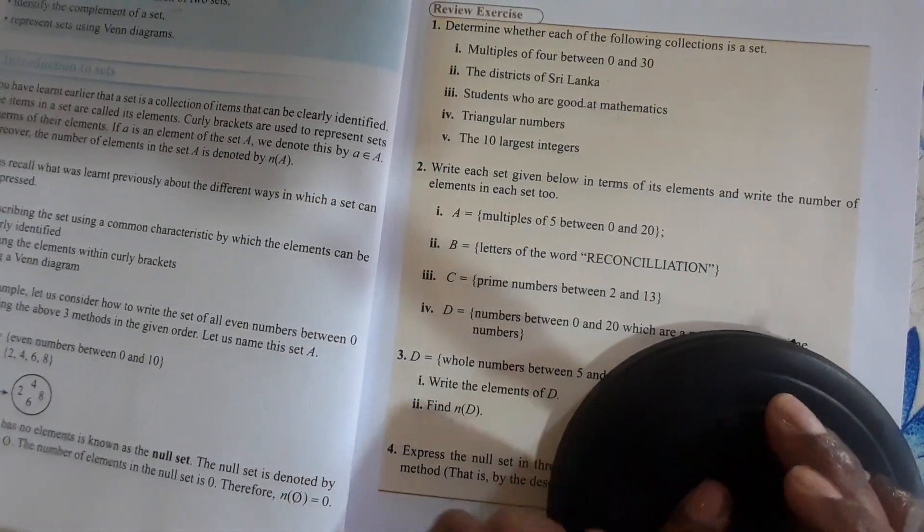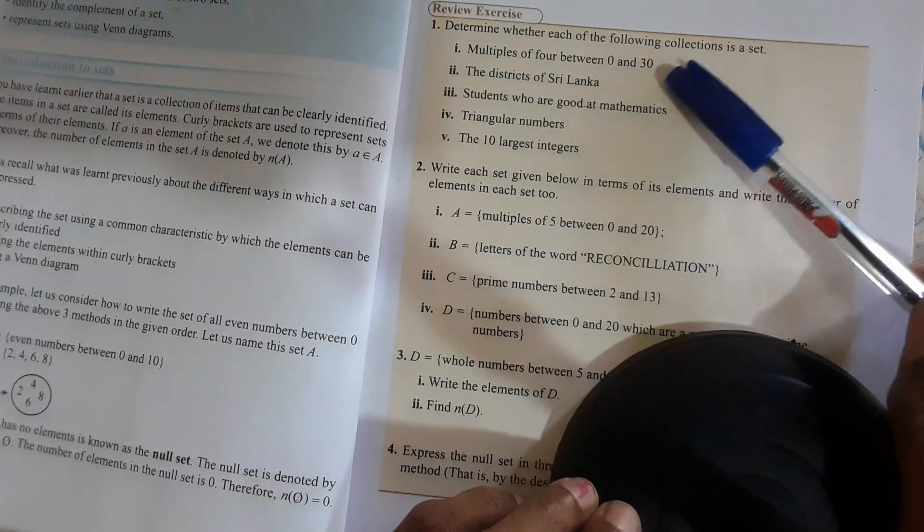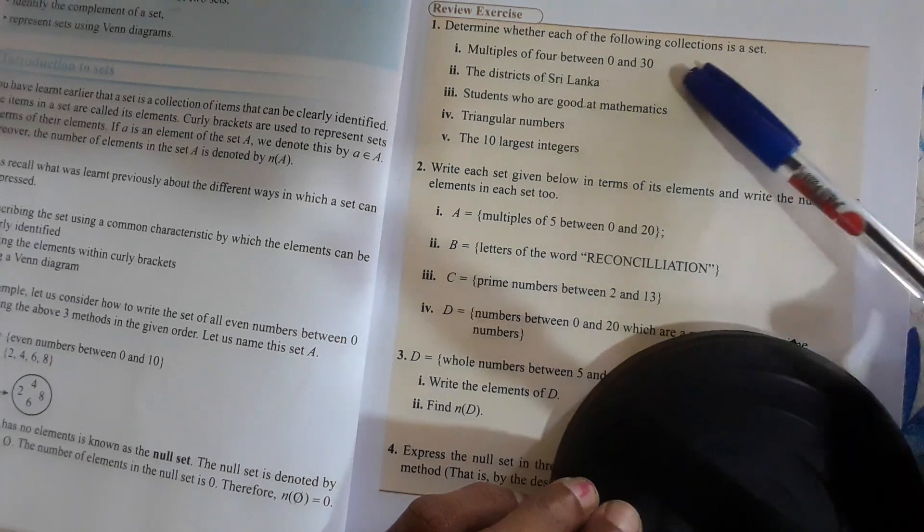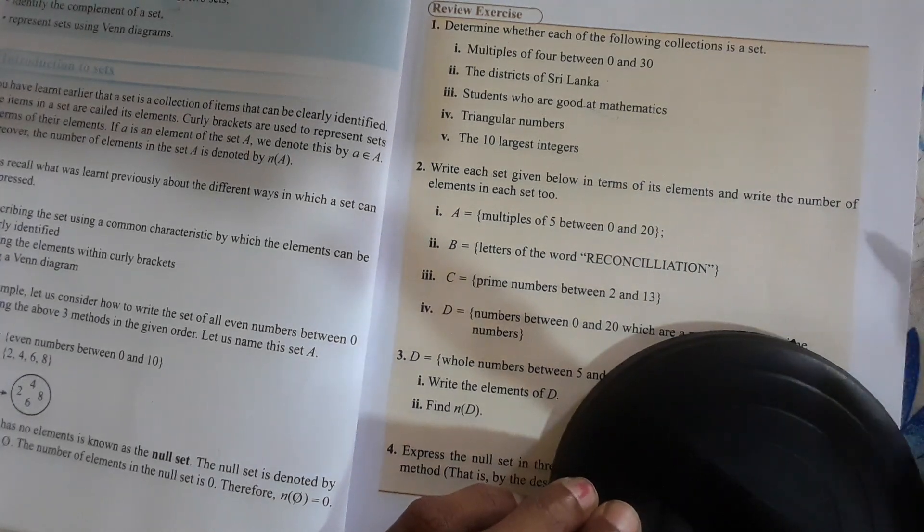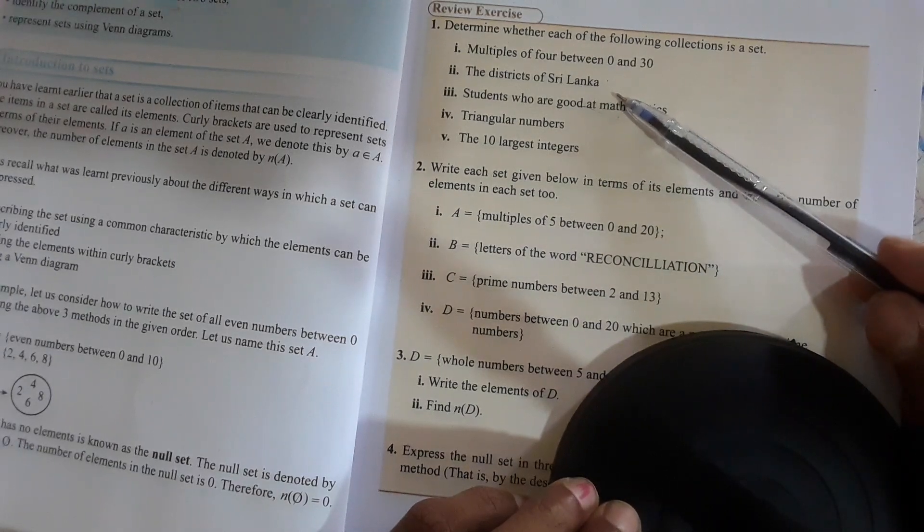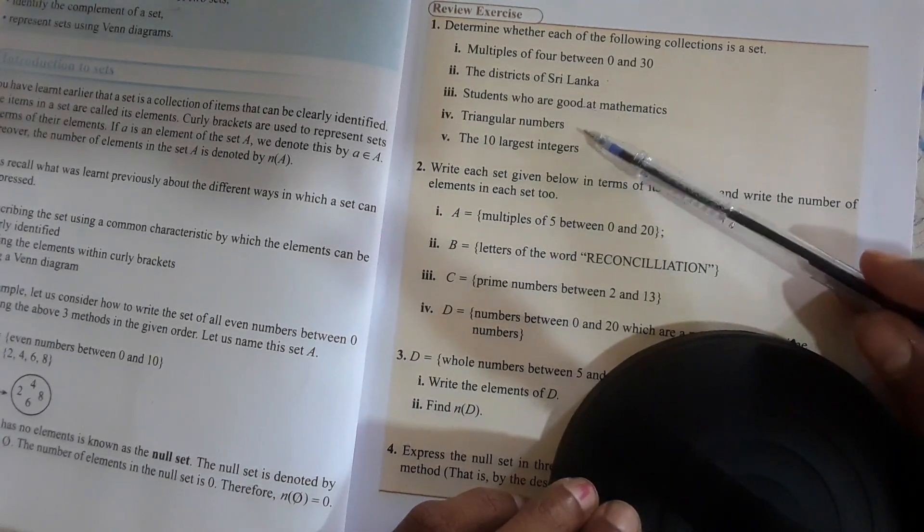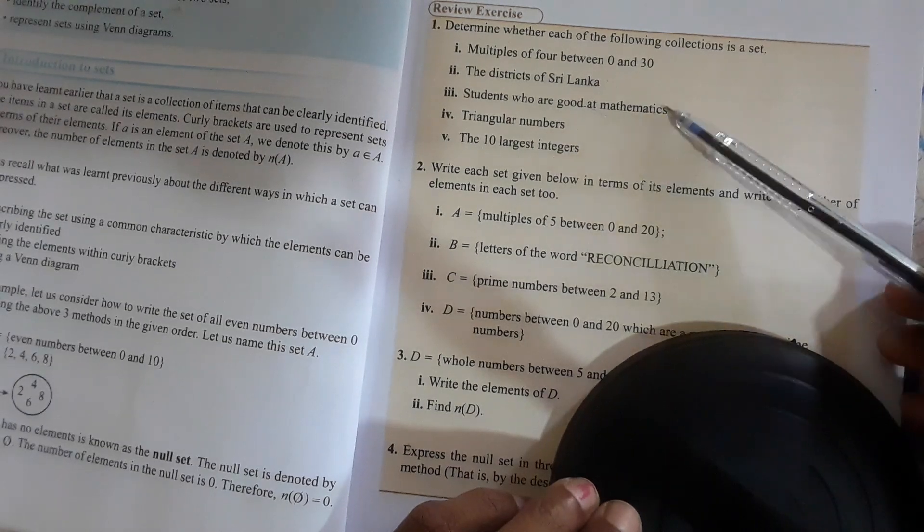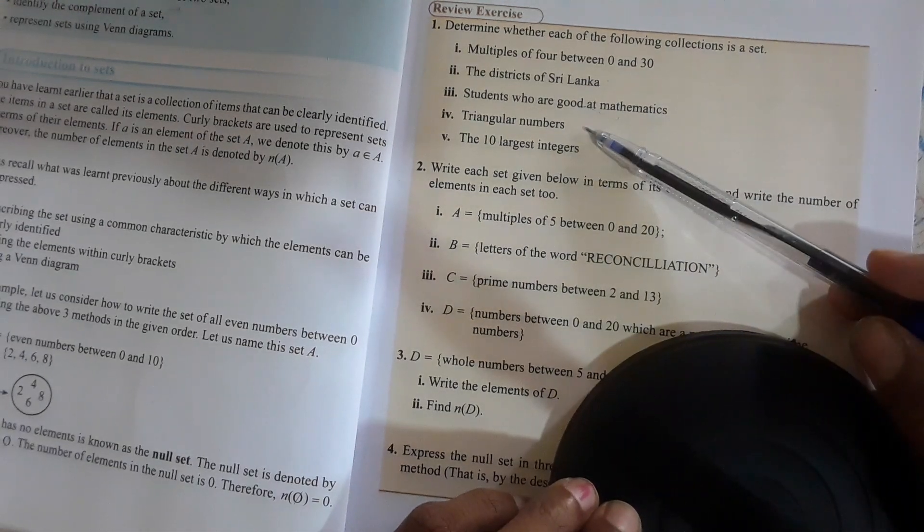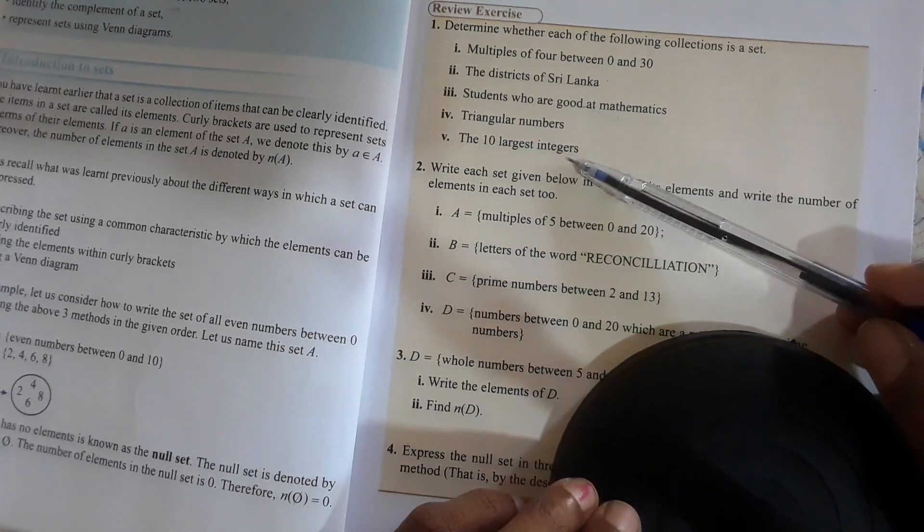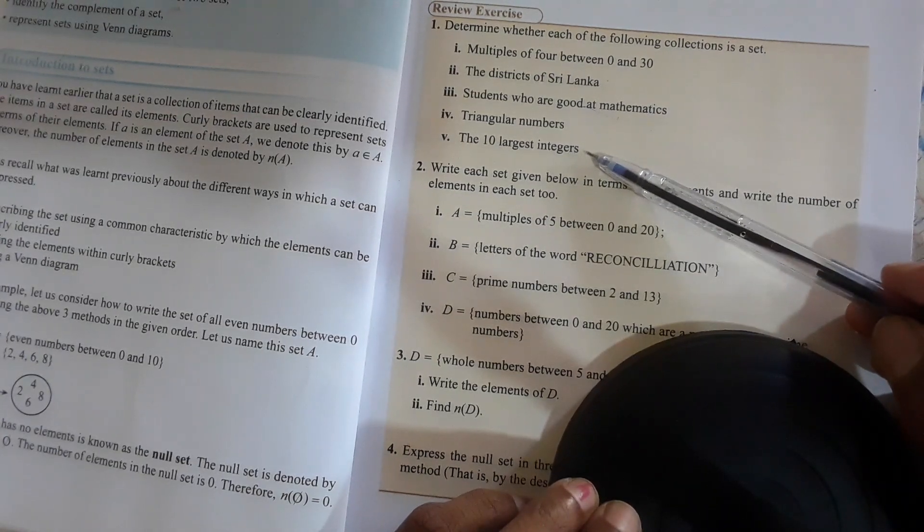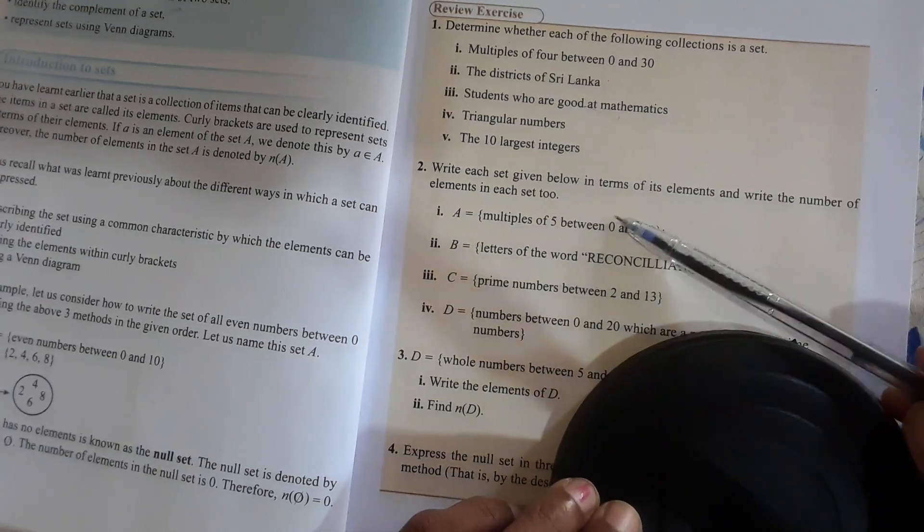Now we discuss this review exercise. Determine whether each of the following collection is a set. Multiples of 4 between 0 and 30: Yes, it is clearly identified, it is a set. The districts of Sri Lanka: Yes, it is a set. Students who are good at mathematics: We can't clearly identify, it is not a set. Triangular numbers: Yes. The 10 largest integers: Can we clearly identify this? No, it is not a set.